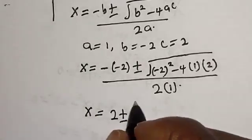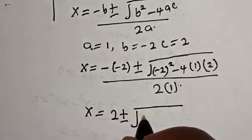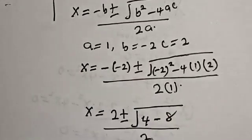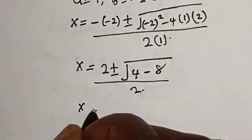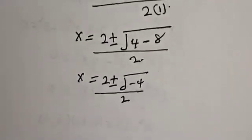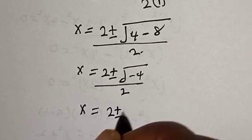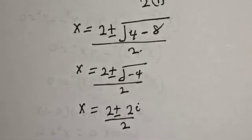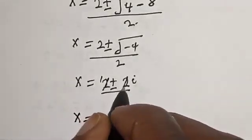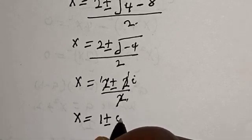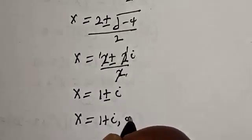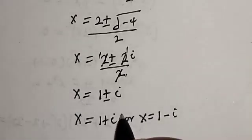Let's substitute. We have x is equal to minus minus 2 plus or minus square root of minus 2 squared minus 4 times 1 times 2, divided by 2 times 1. This gives x is equal to 2 plus or minus square root of 4 minus 8 over 2, which is x equal to 2 plus or minus square root of minus 4 over 2. So x is equal to 2 plus or minus 2i over 2, giving x equal to 1 plus or minus i.